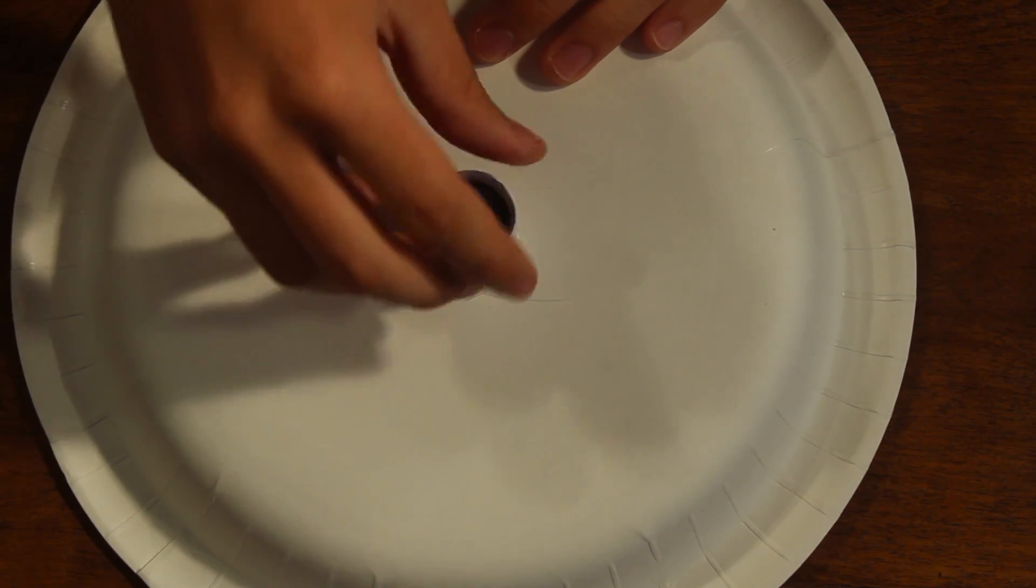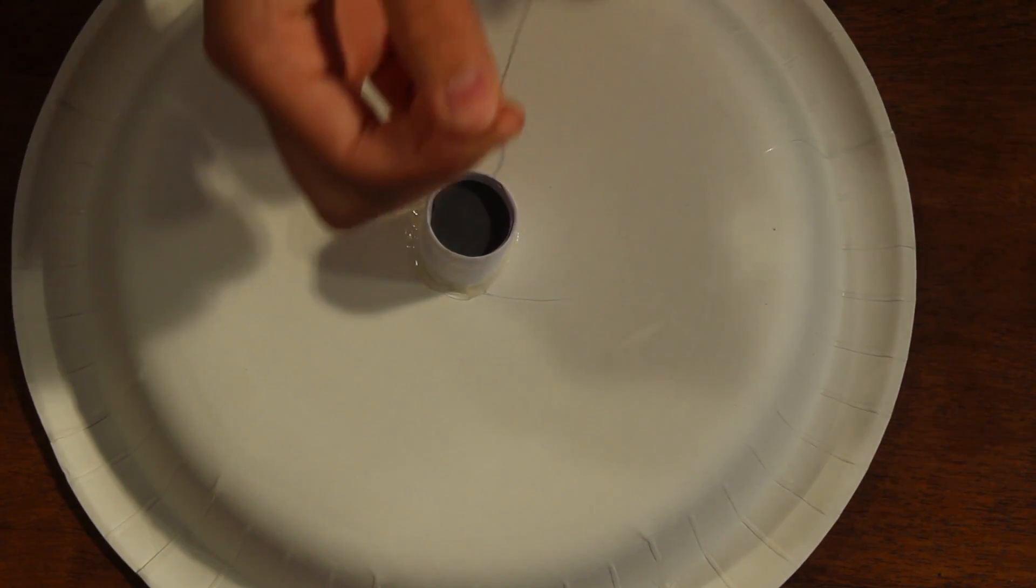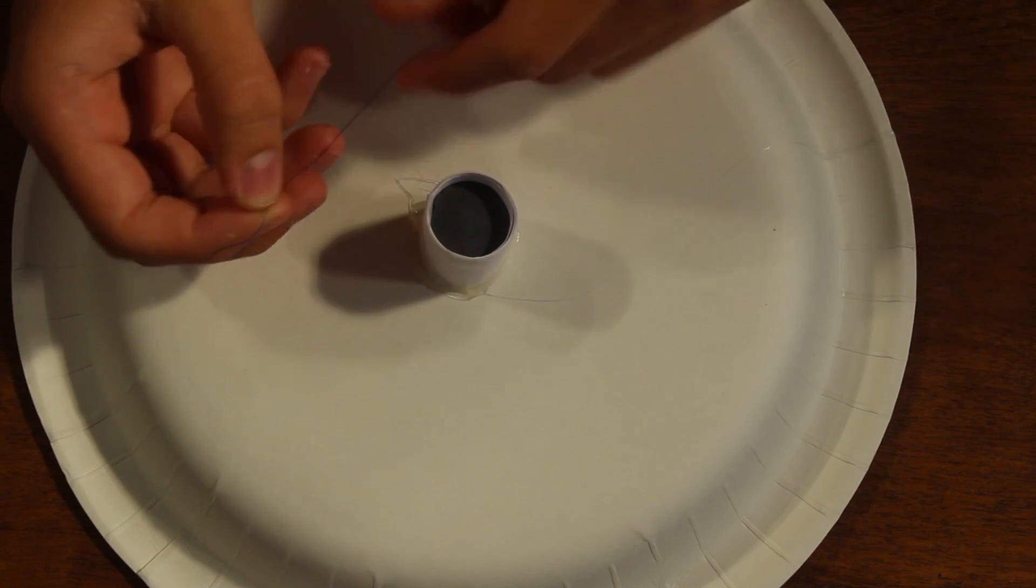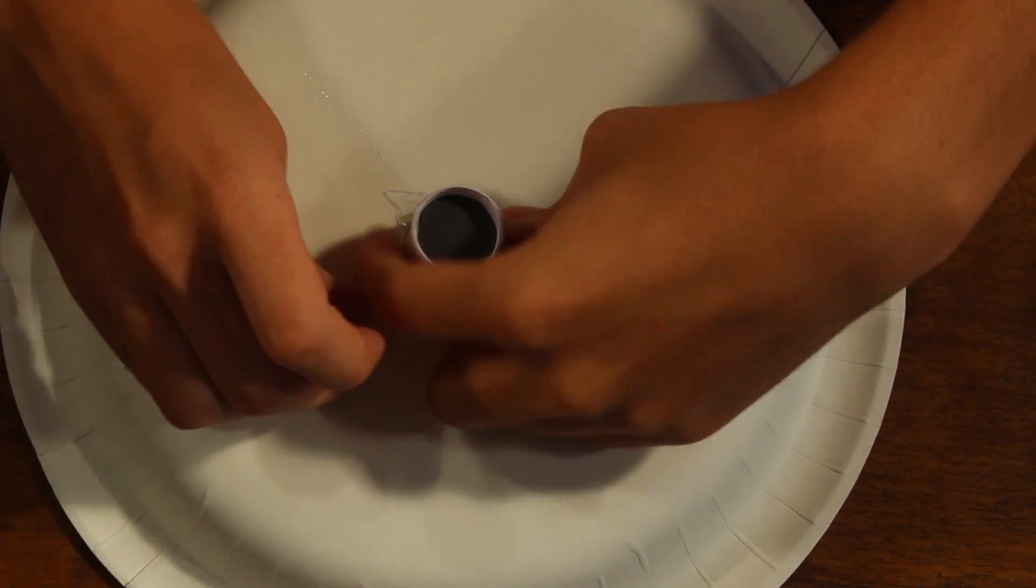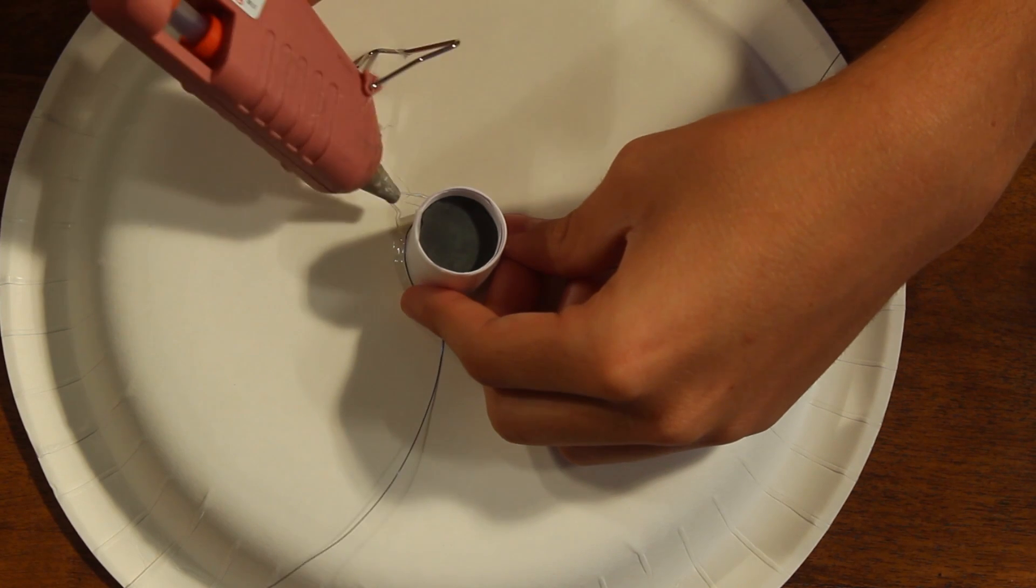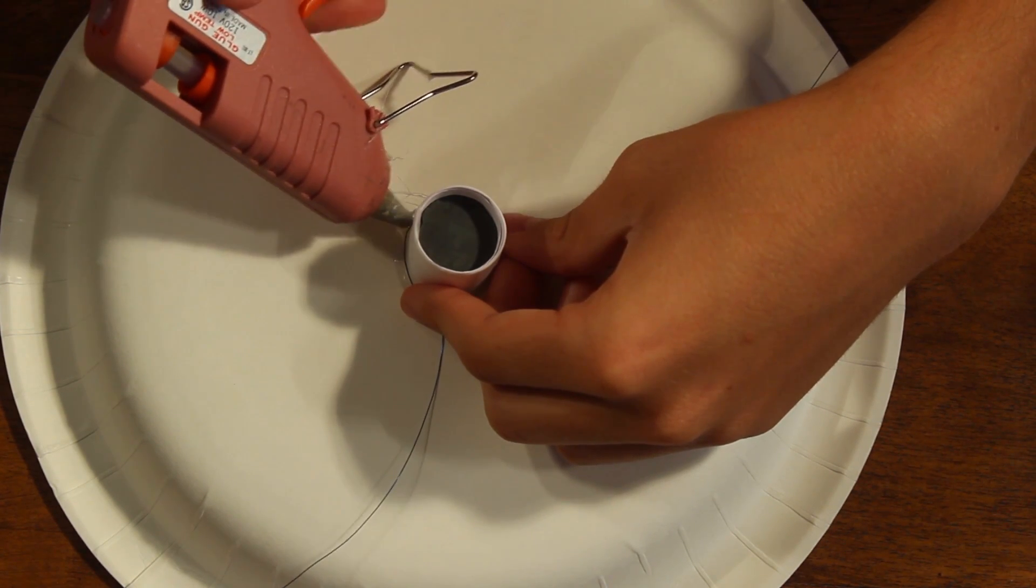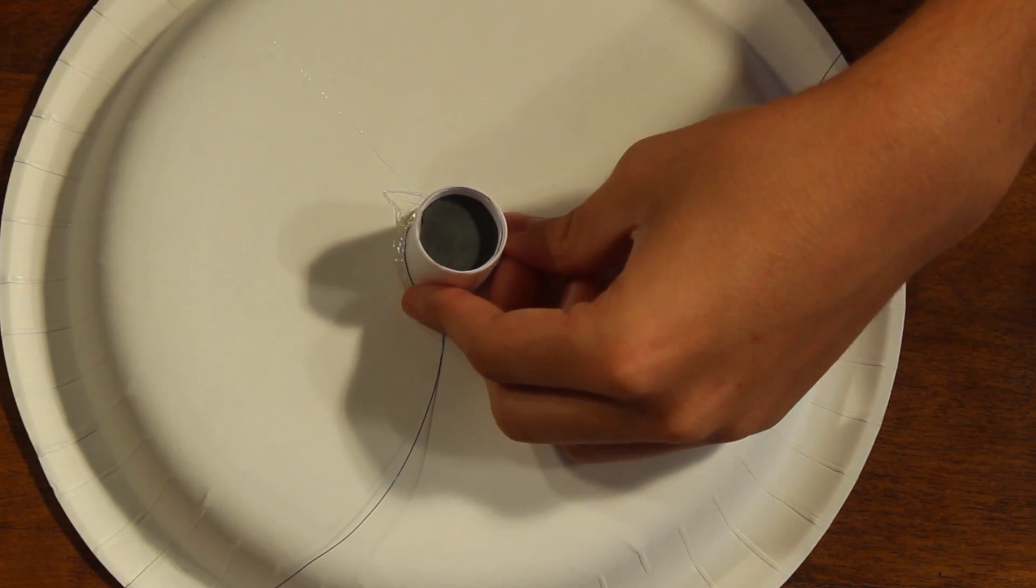Step three, we're going to be taking our magnet, sticking it back in, and we're going to take our magnet wire and start wrapping it around. Make sure you leave a little bit of extra wire to get away from the plate, just to make it easier in the future. I just took a little bit of hot glue and stuck it at the very bottom just to secure the wire so when I wrap it, I can wrap it really tight.